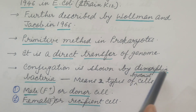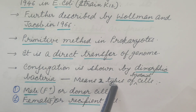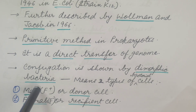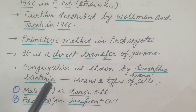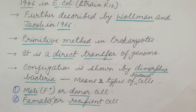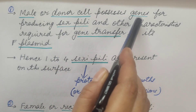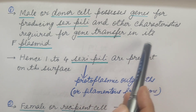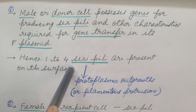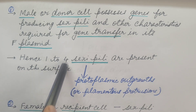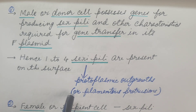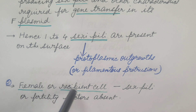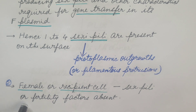Conjugation is shown by dimorphic bacteria — that is, bacteria in which two types of bacterial cells are present. The male cell, also known as F-plus or donor cell, has F-plasmid present. The female cell, also known as F-minus or recipient cell, has F-plasmid absent. The male or donor cell possesses genes for producing sex pili and other characteristics required for gene transfer in its plasmid. Hence, 1 to 4 sex pili are present on the surface as protoplasmic outgrowths or filamentous protrusions. In the female or recipient cell, sex pili and fertility factors are absent as F-plasmid is absent.